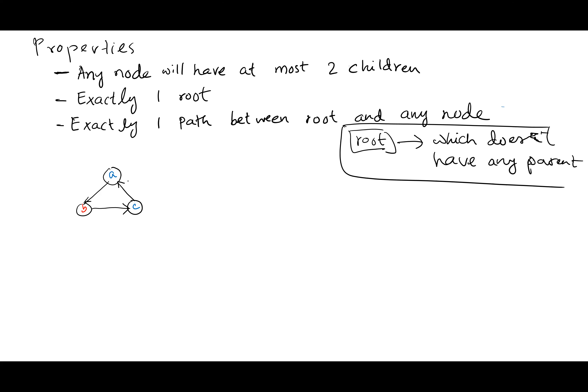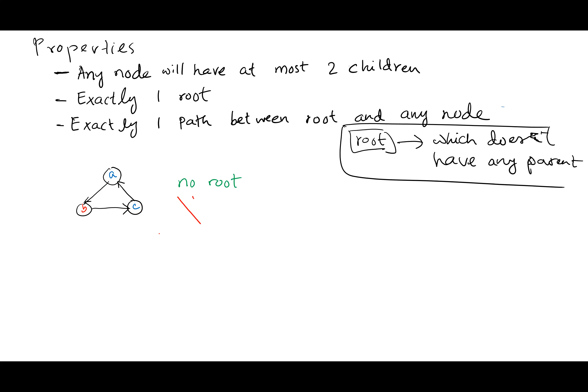Here, this graph doesn't have any root. The root is the node that has no parent, and in this graph there is no such node. Since there is no root, this cannot be a binary tree.